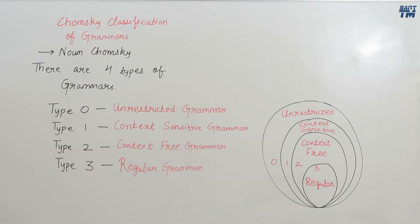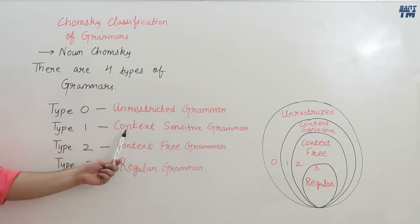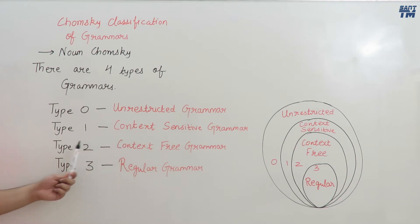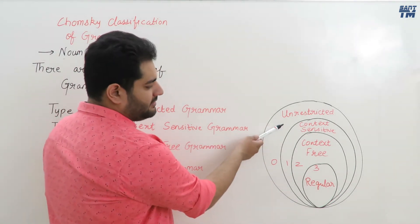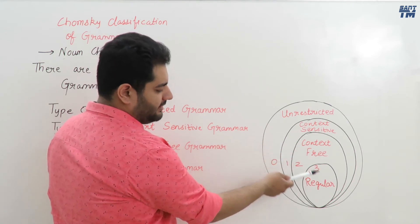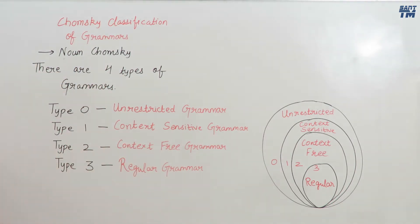Chomsky classification of grammars is based on the discovery by a scientist named Norm Chomsky, who said that there are four types of grammars: type 0, type 1, type 2, and type 3. Type 0 grammars are called unrestricted grammars, type 1 are called context sensitive grammars, type 2 are called context free grammars, and type 3 are called regular grammars. In terms of a diagram, we represent them as nested sets: unrestricted, context sensitive, context free, and regular.